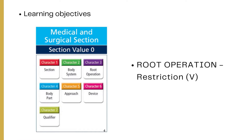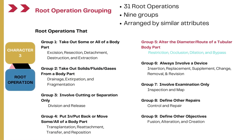At the end of this learning session, we will have a better understanding of coding the root operation Restriction from the fifth group of root operations in the medical and surgical section, which is the largest section of ICD-10-PCS. There are a total of nine groups of root operations and 31 root operations in total. These groupings are divided based on similar kinds of procedures, and the attributes of the procedure decide which group it falls into.